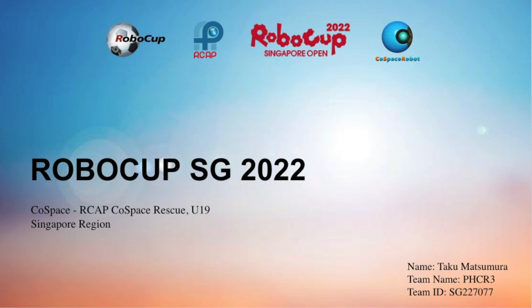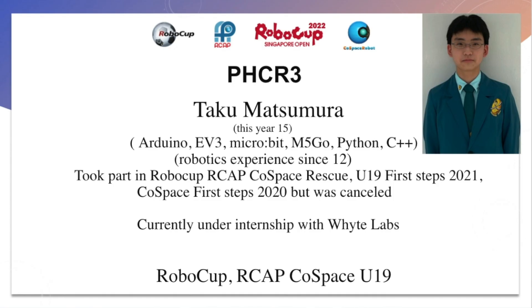Hello, my name is Toko Matsumura. My team name is PHCR3 and my team ID is SG227077. This year I am 15 years old. I have had robotics and coding experience since age 12. Some examples are Arduino, EV3, Microbit, Enfygo, Python, and C++.